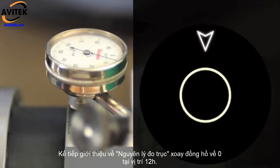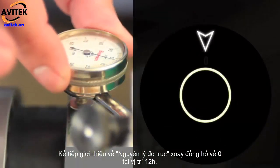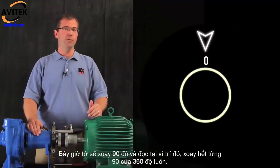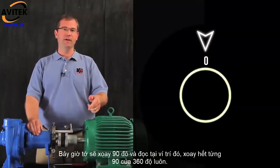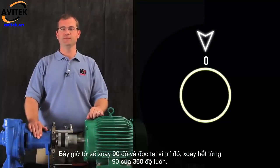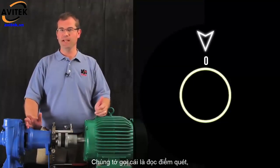Next, to introduce the Validity Rule, let's set the indicator to zero at 12 o'clock. Now we're going to take readings every 90 degrees for the full 360 degrees. We call this taking sweep indicator readings.